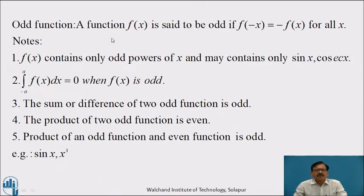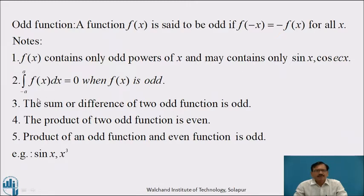Now, about the odd function: a function f(x) is said to be odd if f(−x) = −f(x) for all x. We note the following: first, f(x) contains only odd powers of x and may contain only sin x. Second, the integration from minus a to a of f(x) dx equals 0 when f(x) is odd. Third, the sum or difference of two odd functions is an odd function. Fourth, the product of two odd functions is even. Fifth, the product of an odd function and an even function is odd. For example, sin x and x³.